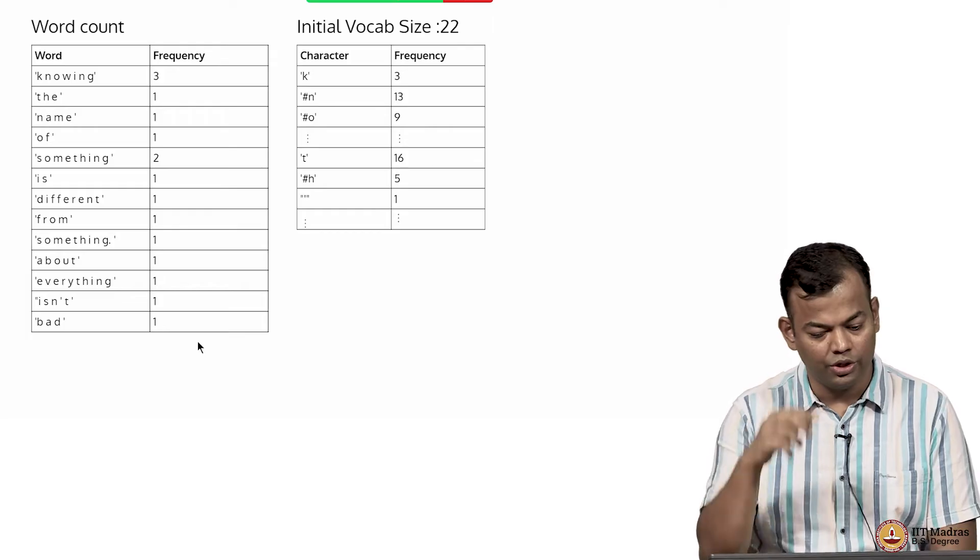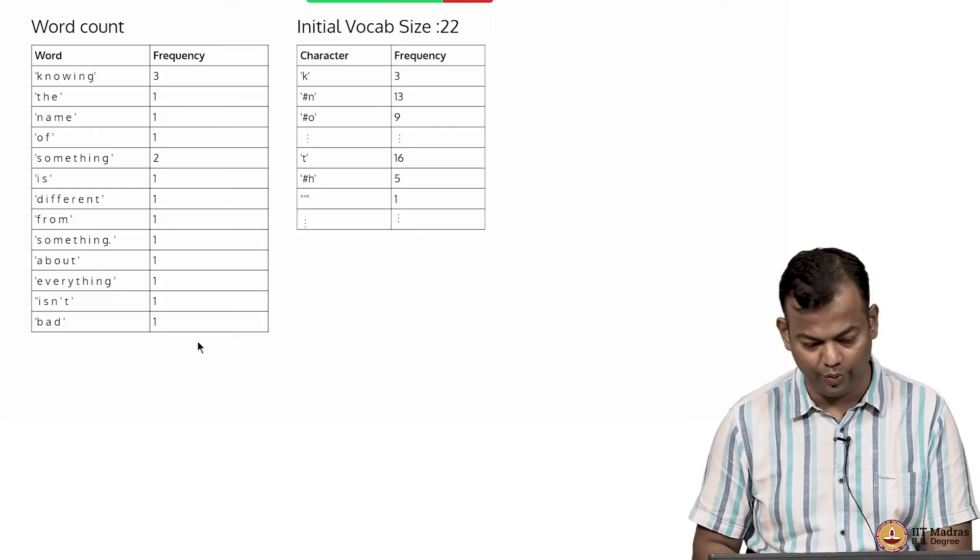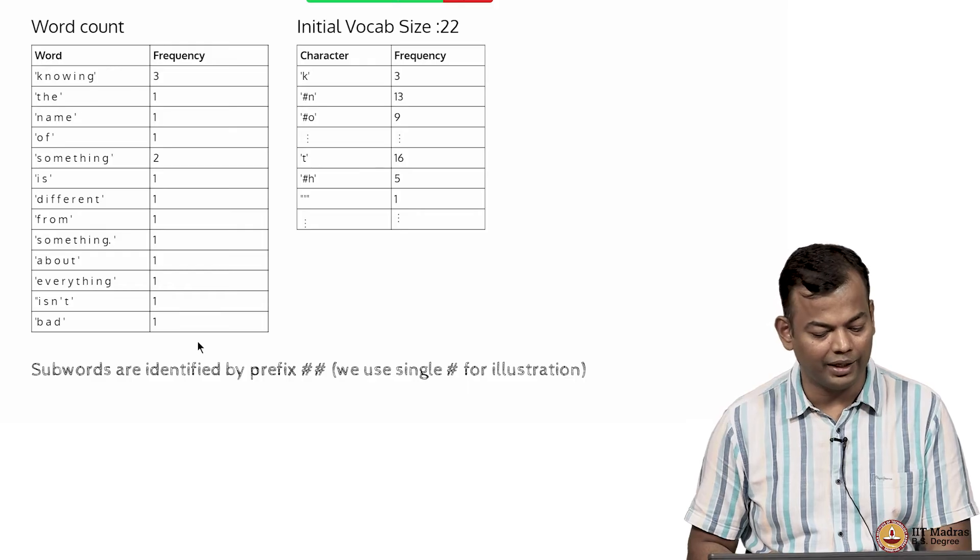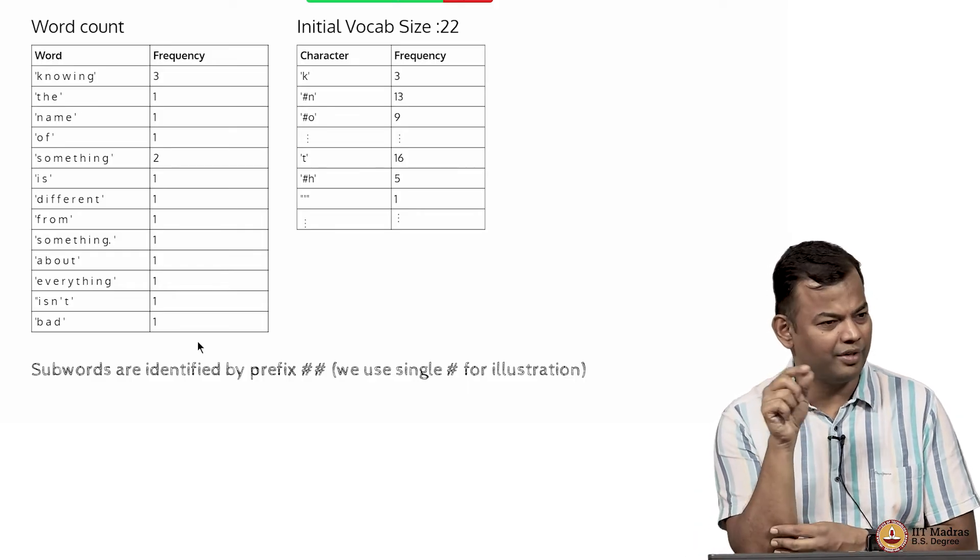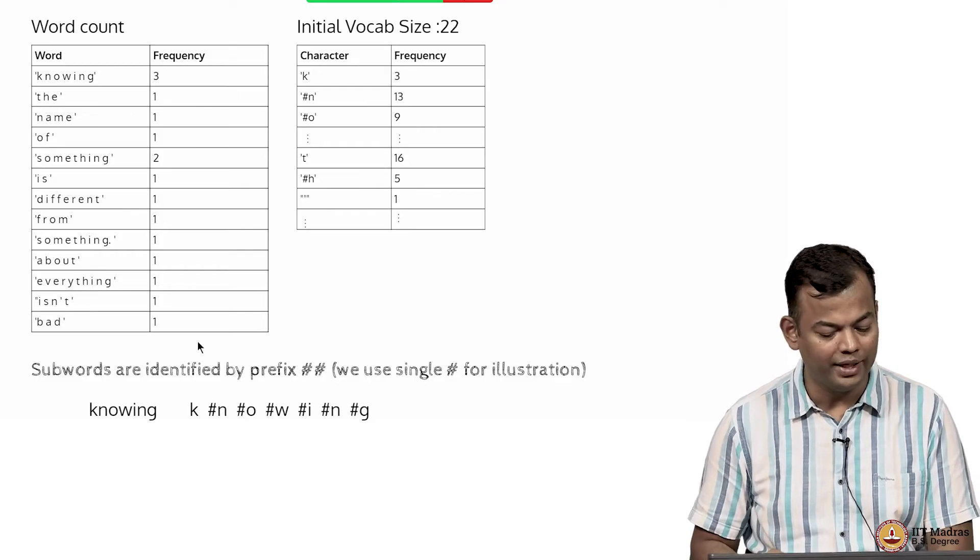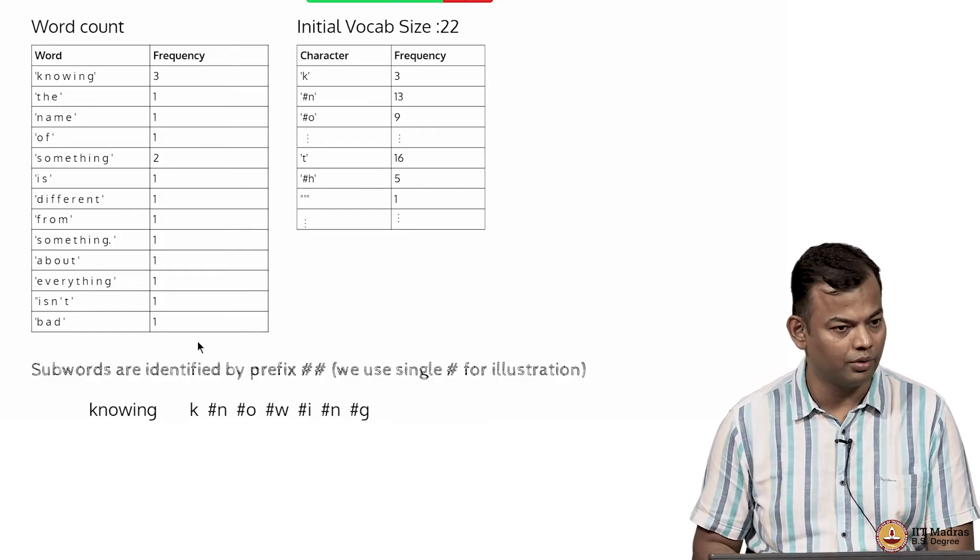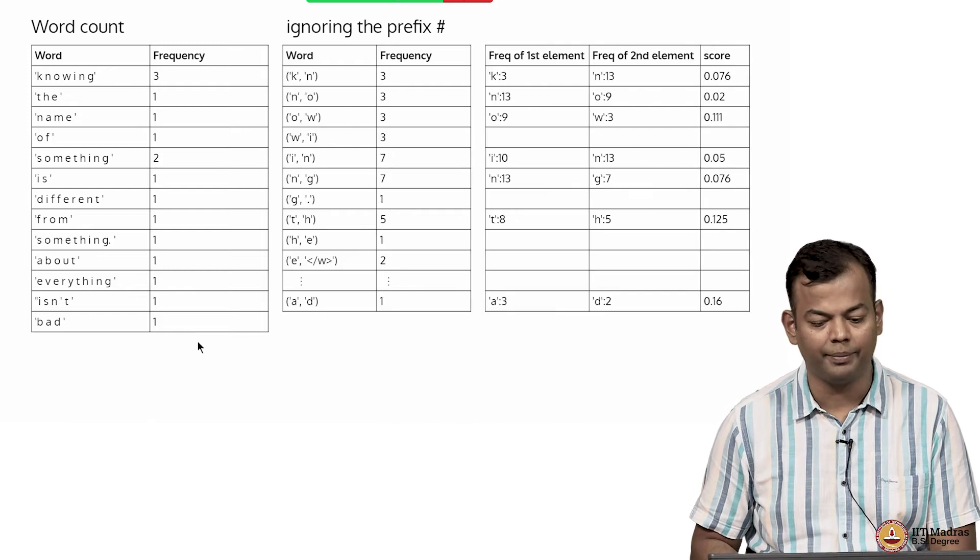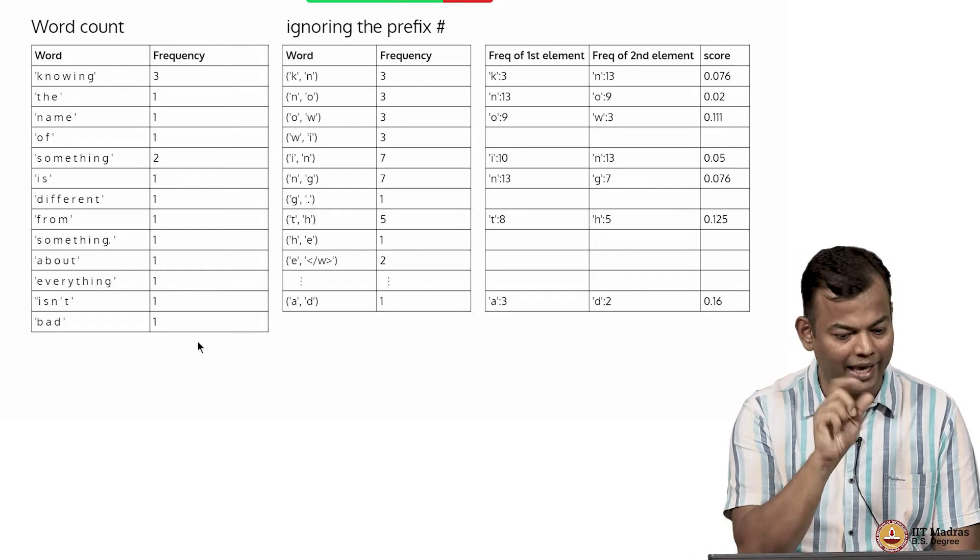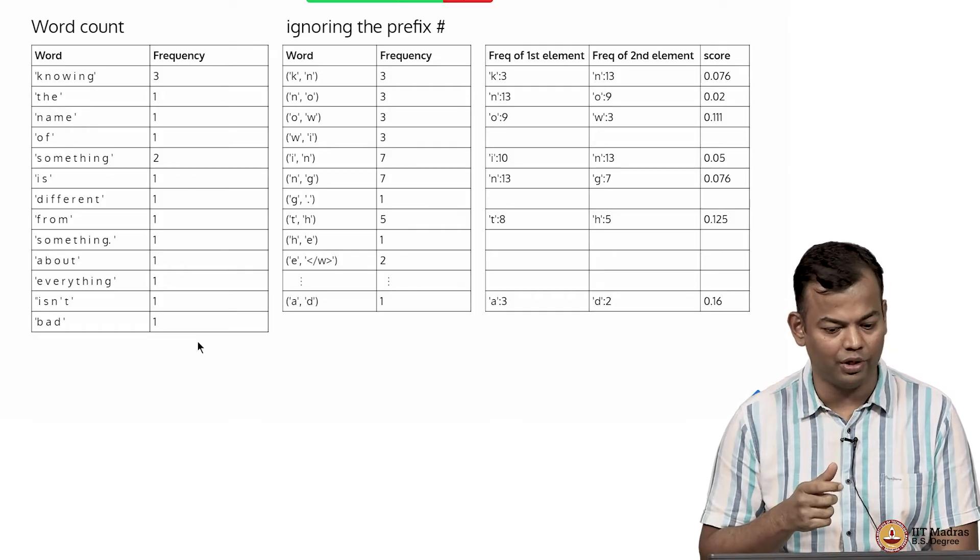We will look at the example. You have this initial vocabulary size of 22 and we identify sub words as hash hash, but now for illustration only we are using hash. Knowing gets split into this. Now you are looking at all the pairs: KN, NO, OW, all these pairs you are looking at.